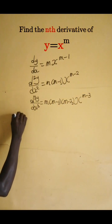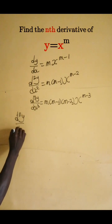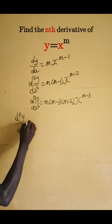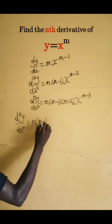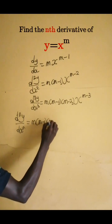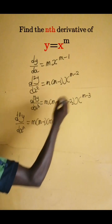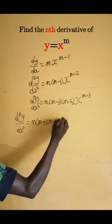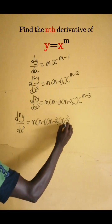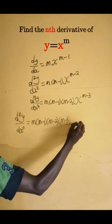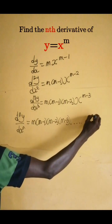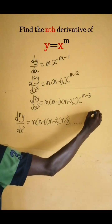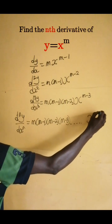What will be the nth derivative? That is the nth derivative of x to the power m. It means that we will take m times (m minus 1) times (m minus 2) times (m minus 3) times (m minus 4) times (m minus 5), continuing to reach the nth term.